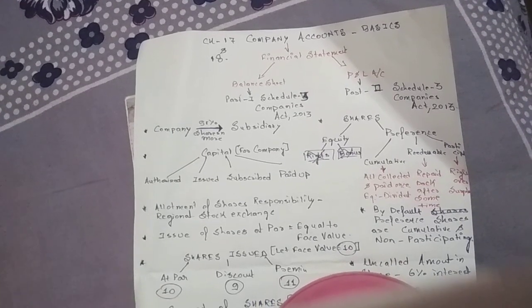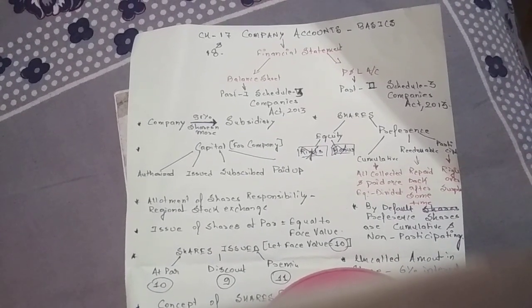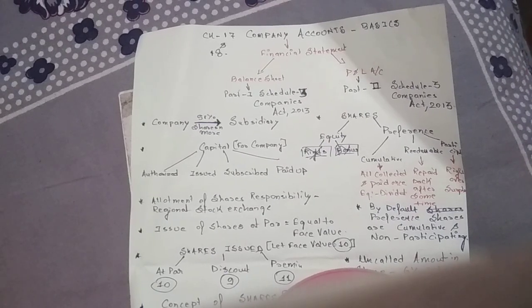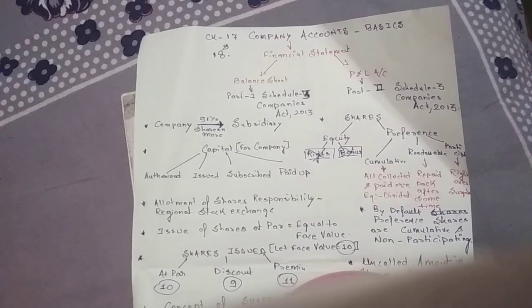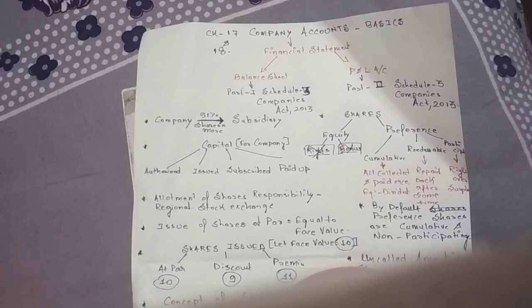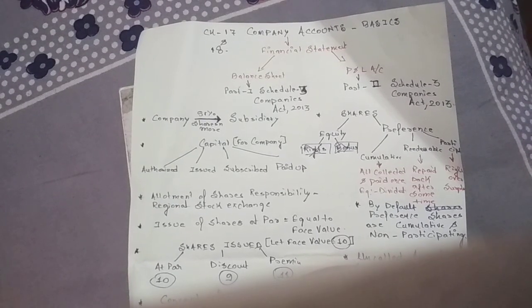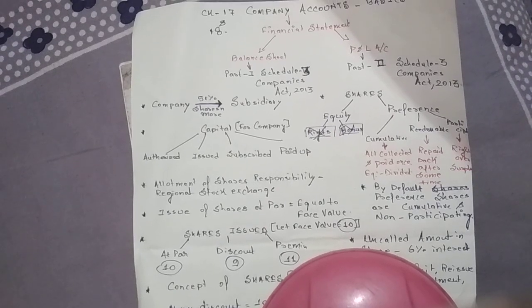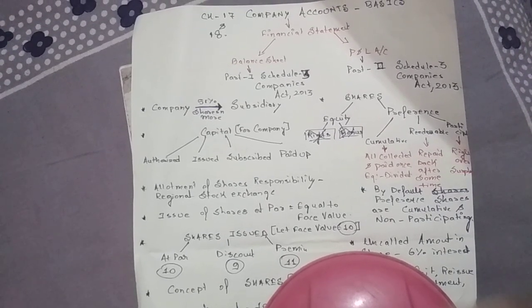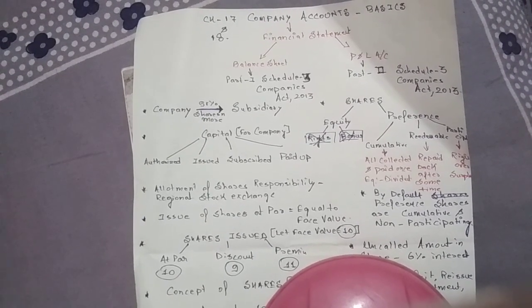Participating preference shares have rights over any surplus. Let's say a company is liquidating — after giving back all capital and paying all debts, if there is a surplus amount remaining, that surplus can be distributed among the participating preference shareholders.